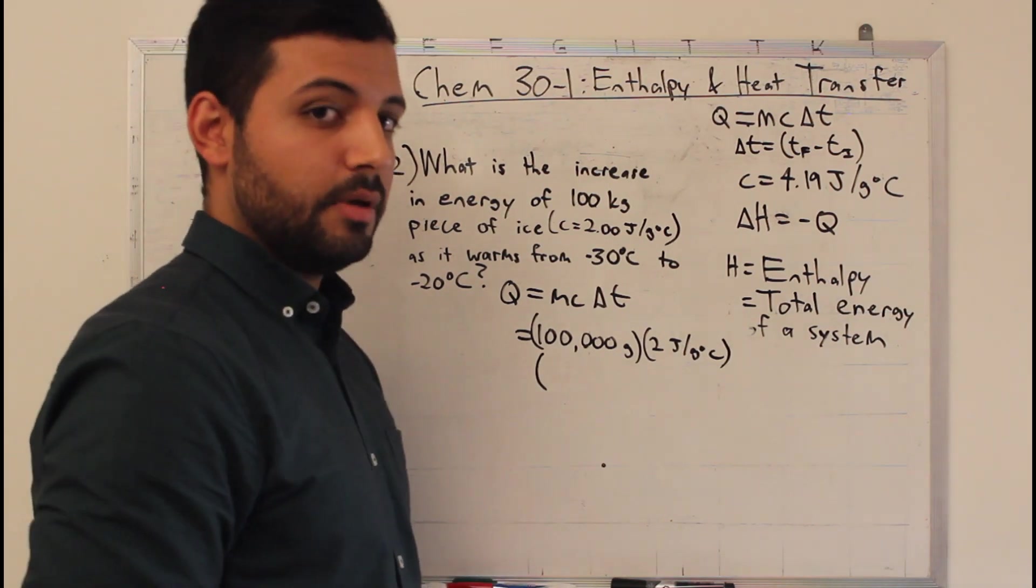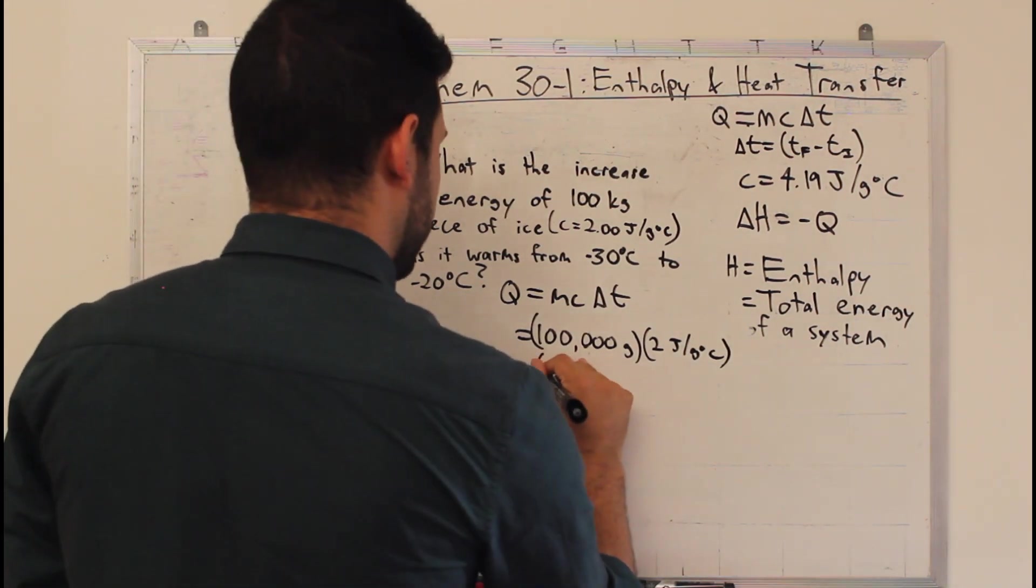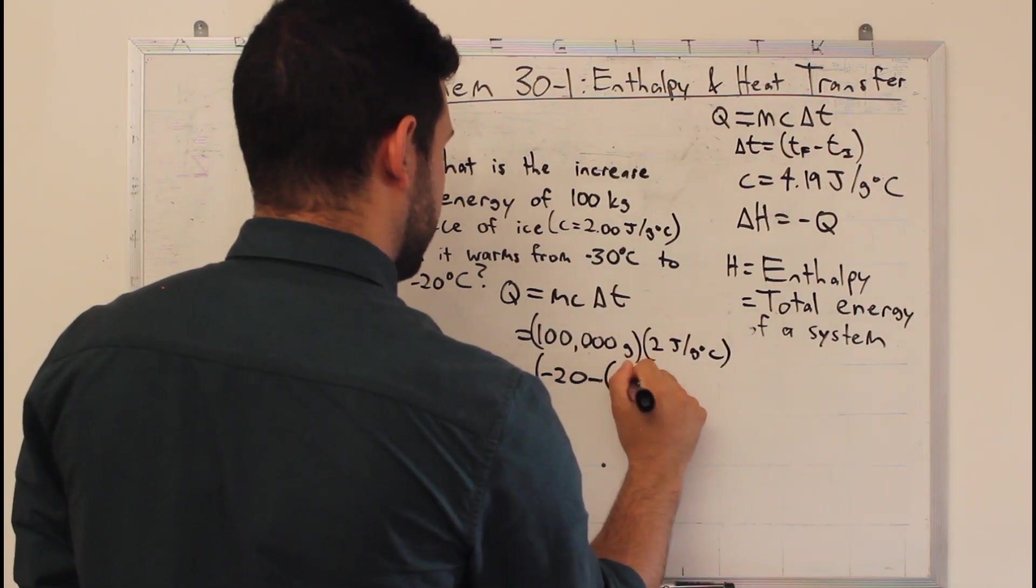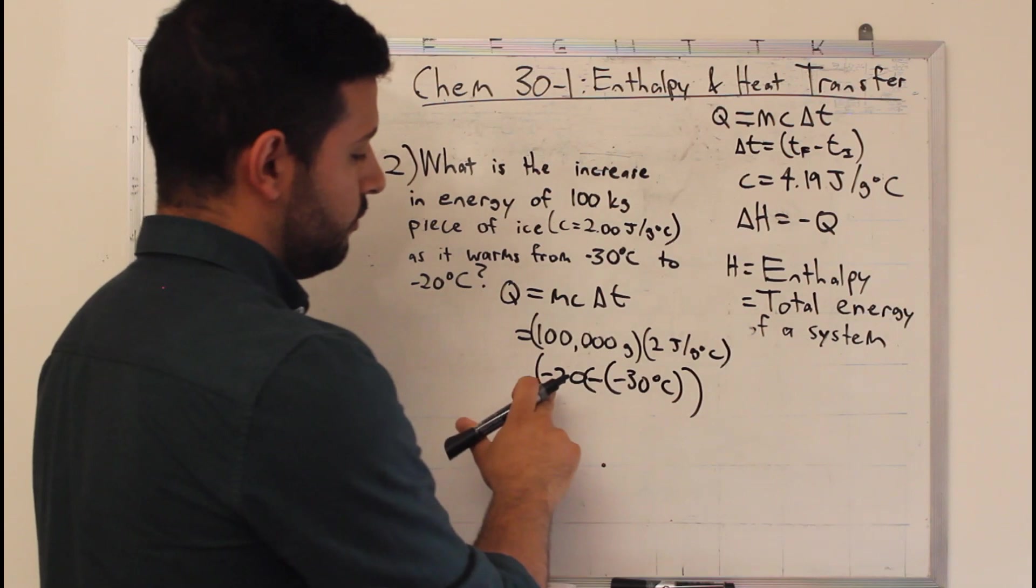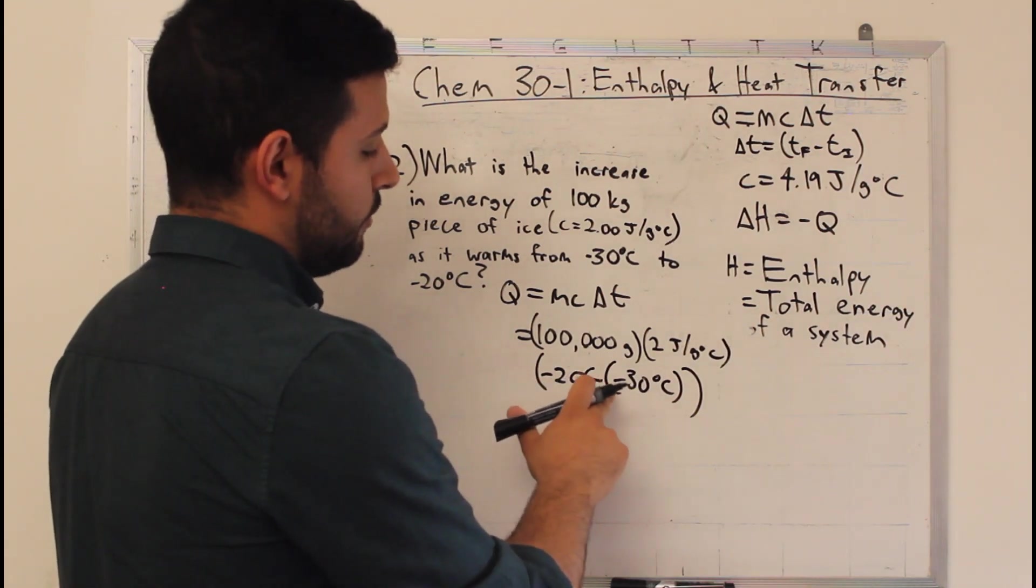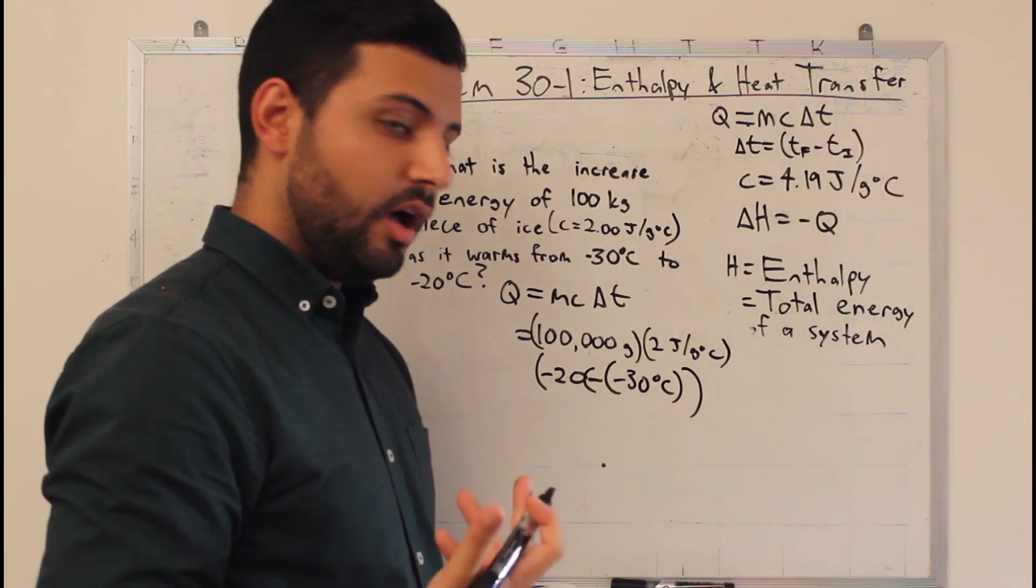minus 30. All these negatives might be a little confusing, but once you plug them into the equation, it makes more sense. So, minus 20 degrees Celsius, minus minus 30 degrees Celsius, two negatives is a positive. Negative 20 plus 30 is positive 10.